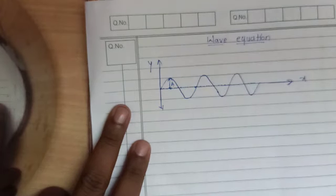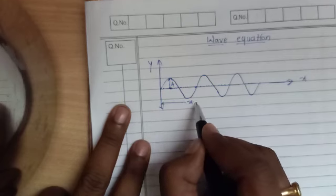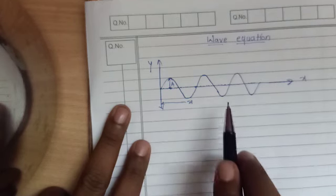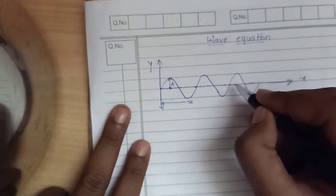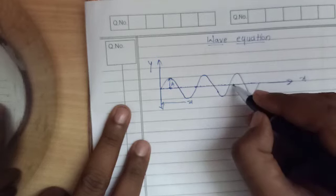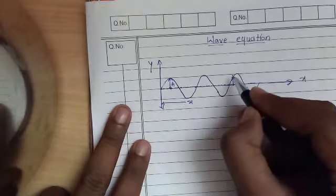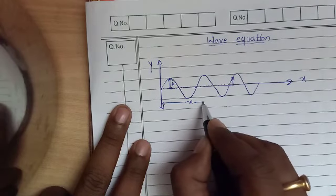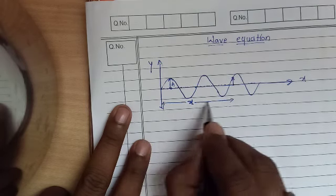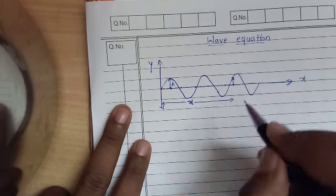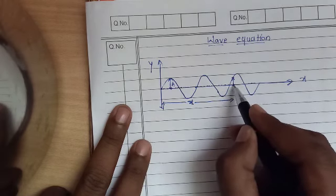The displacement of the particle is x. For any particle on the x-axis, it oscillates along the y-axis. If we consider this particle, it moves up to here, so the displacement of the particle is y. The displacement of energy, which means the wave, is x — displacement of the wave means energy is x, and displacement of the particle is y.